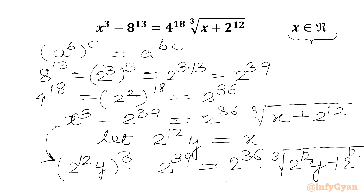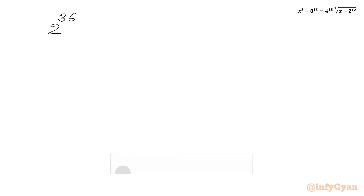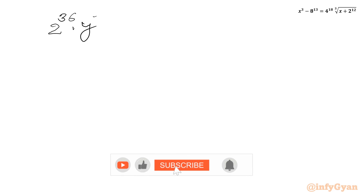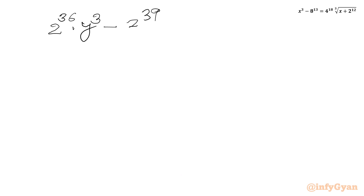We can take 2^12 common from the radicand. Using the same exponential property, 2^(12×3) = 2^36. So the equation becomes 2^36 · y³ − 2^39 = 2^36 × ∛(2^12 · (y + 1)).